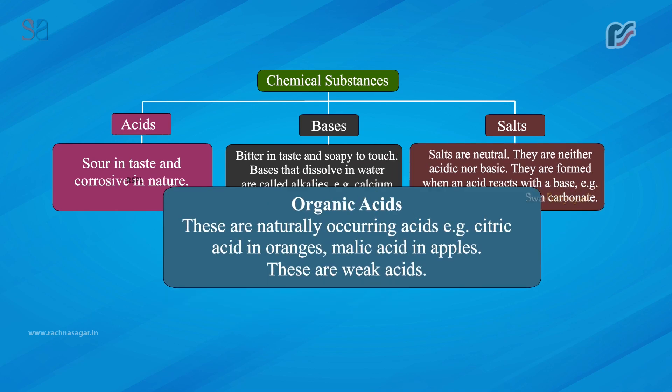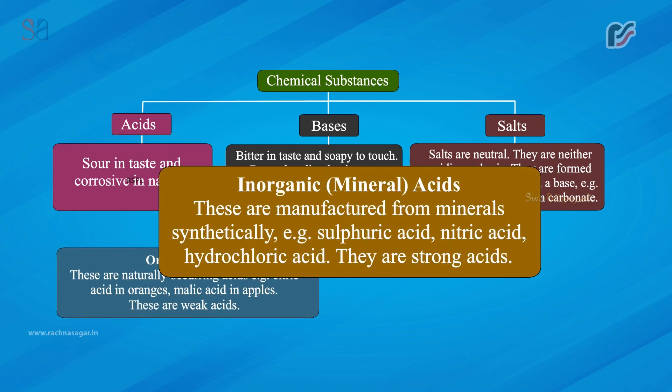Organic acids are naturally occurring acids. Example: citric acid in oranges, malic acid in apples. These are weak acids. Inorganic mineral acids are manufactured from minerals synthetically. Example: sulfuric acid, nitric acid, hydrochloric acid. They are strong acids.